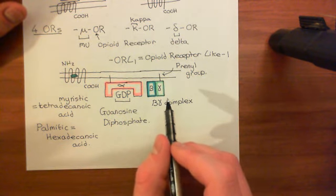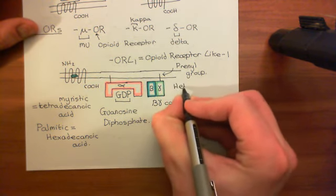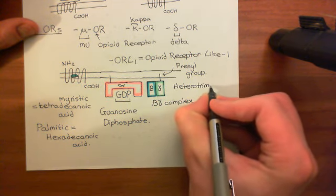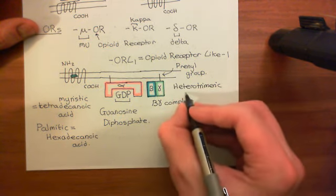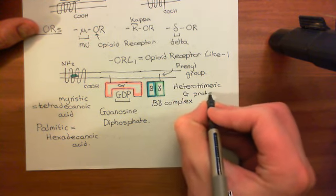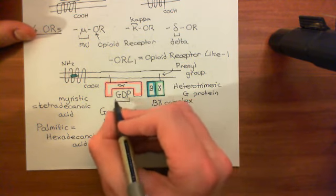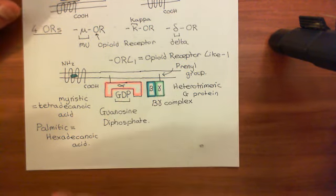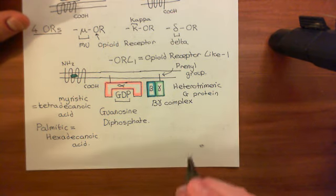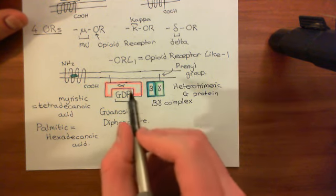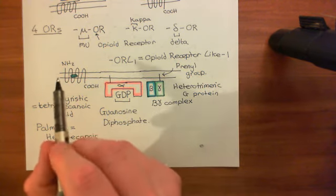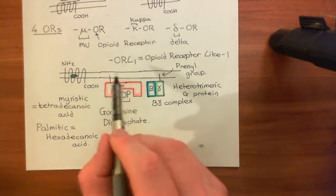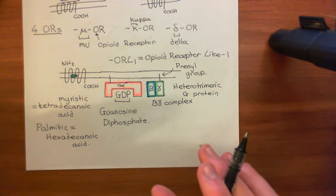We currently have our heterotrimeric G-protein. It's called heterotrimeric because each of the three subunits is different — that's the 'hetero' part. 'Trimeric' refers to having three subunits. 'G-protein' refers to the fact that the alpha subunit is a G-protein because it has guanosine nucleotides bound to it. We'll continue in the next video discussing the range of different alpha, beta, and gamma subunits, and which heterotrimeric G-proteins all four opioid receptors work through.